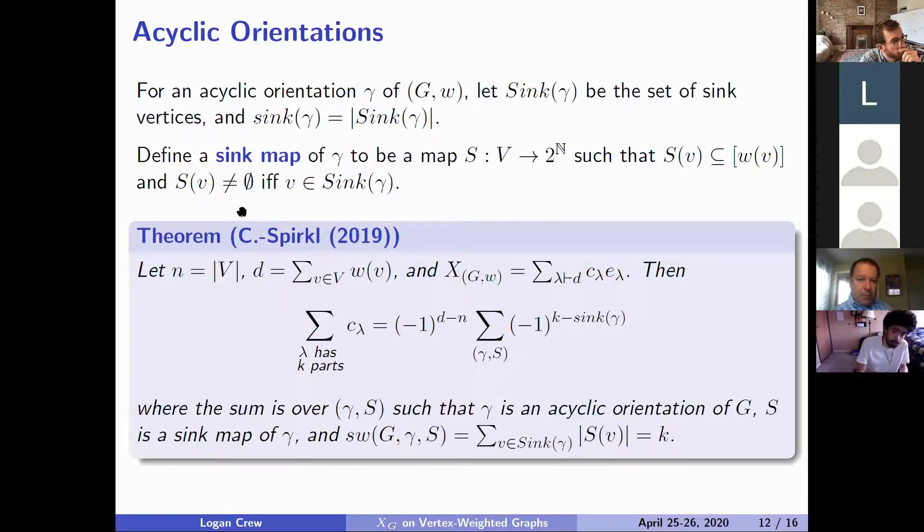And we want it to have the property that it assigns every vertex the empty set unless it's a sink in which case it assigns it a non-empty set. But intuitively what we're doing here is how we're counting acyclic orientations with k sinks as we're viewing a vertex of weight we'll say four as having four miniature vertices plugged into that vertex. And when it's a sink we choose some of those vertices to be sinks that contribute to our terms.